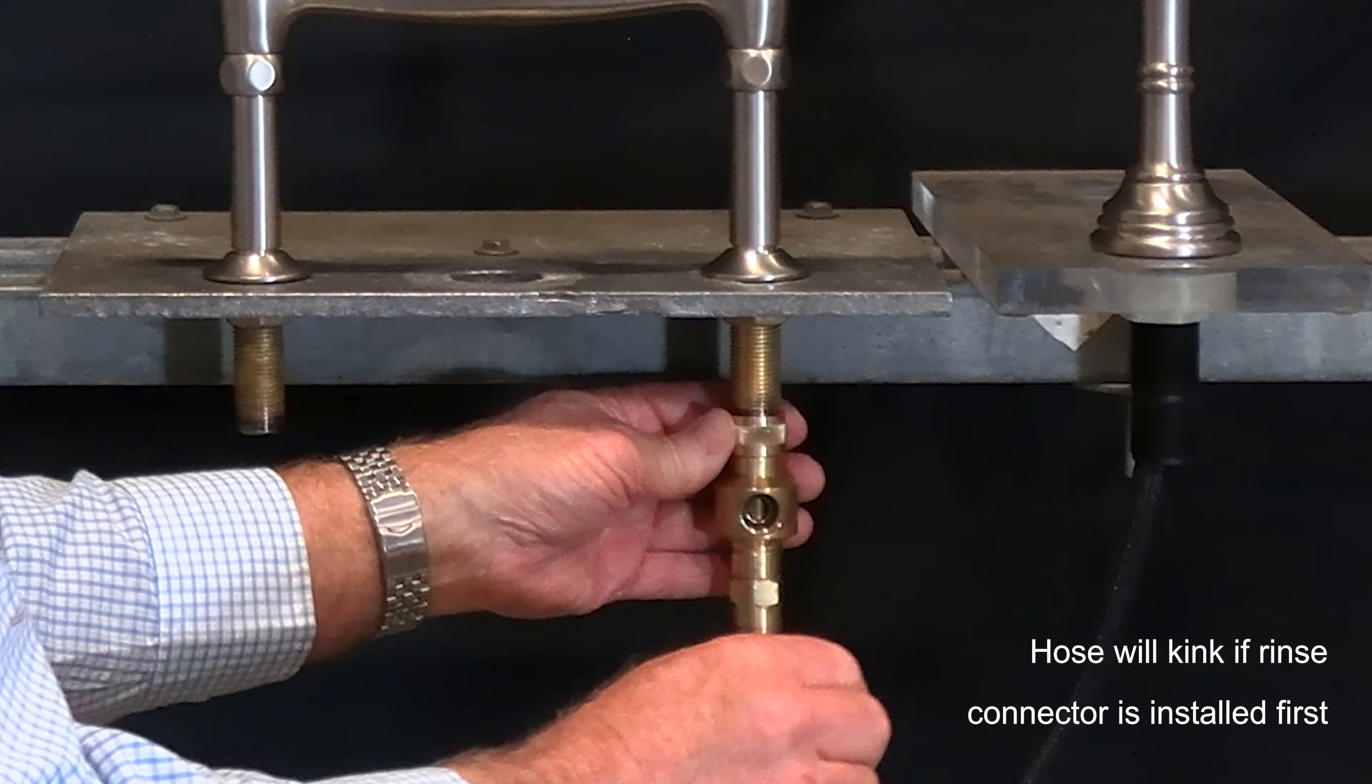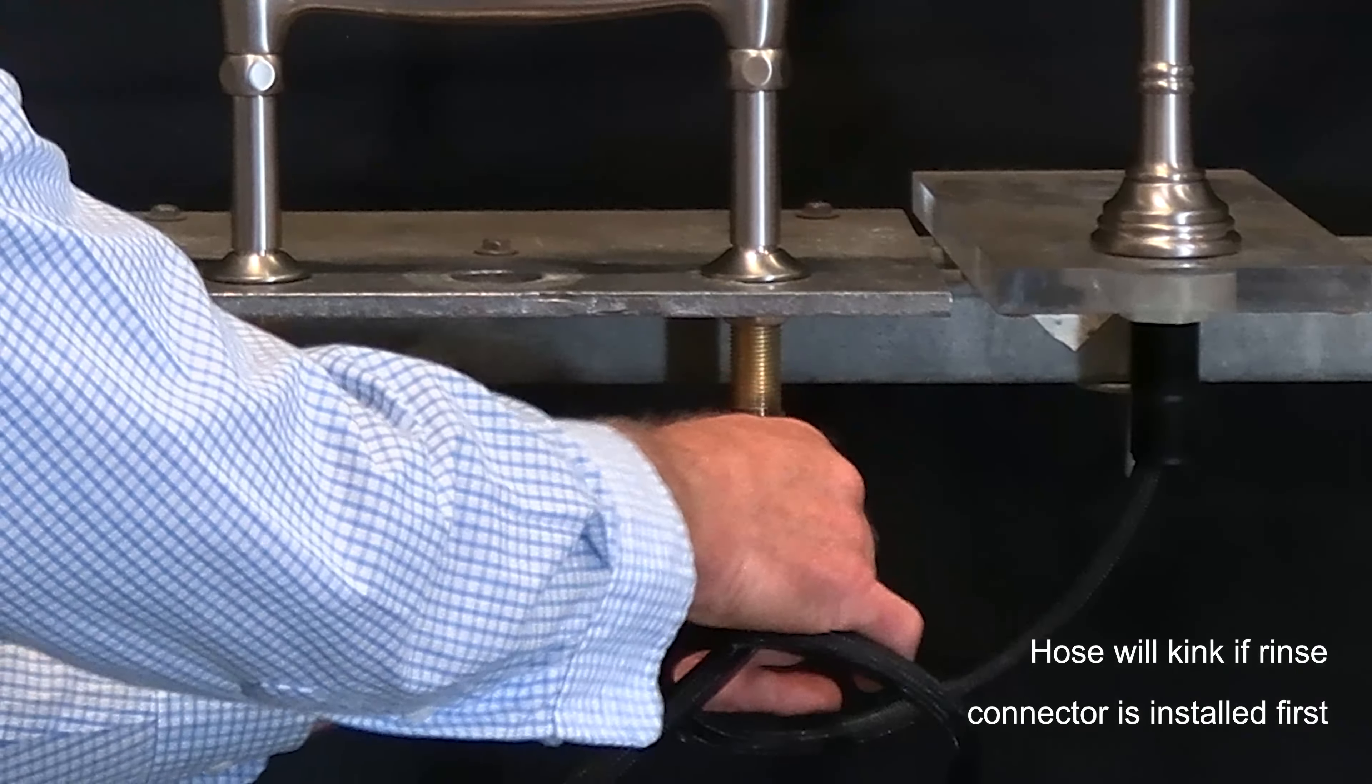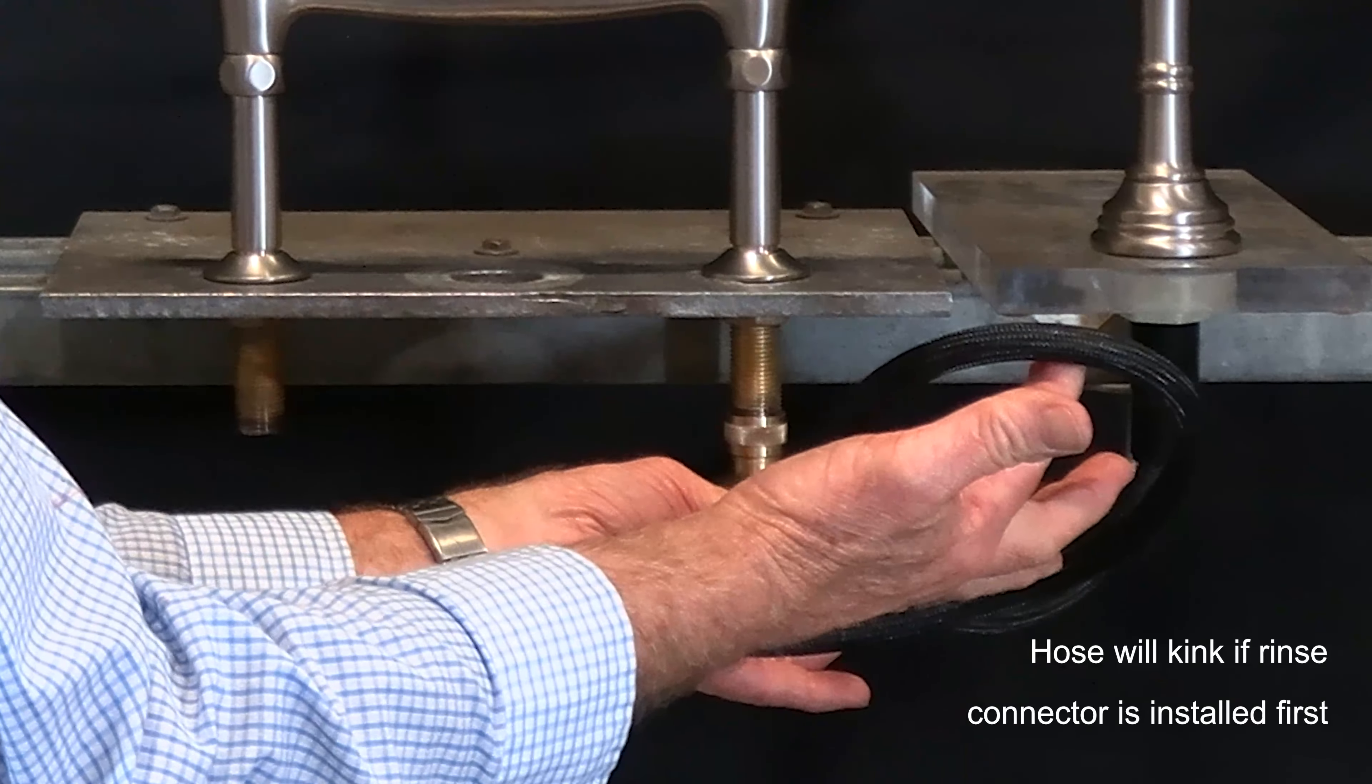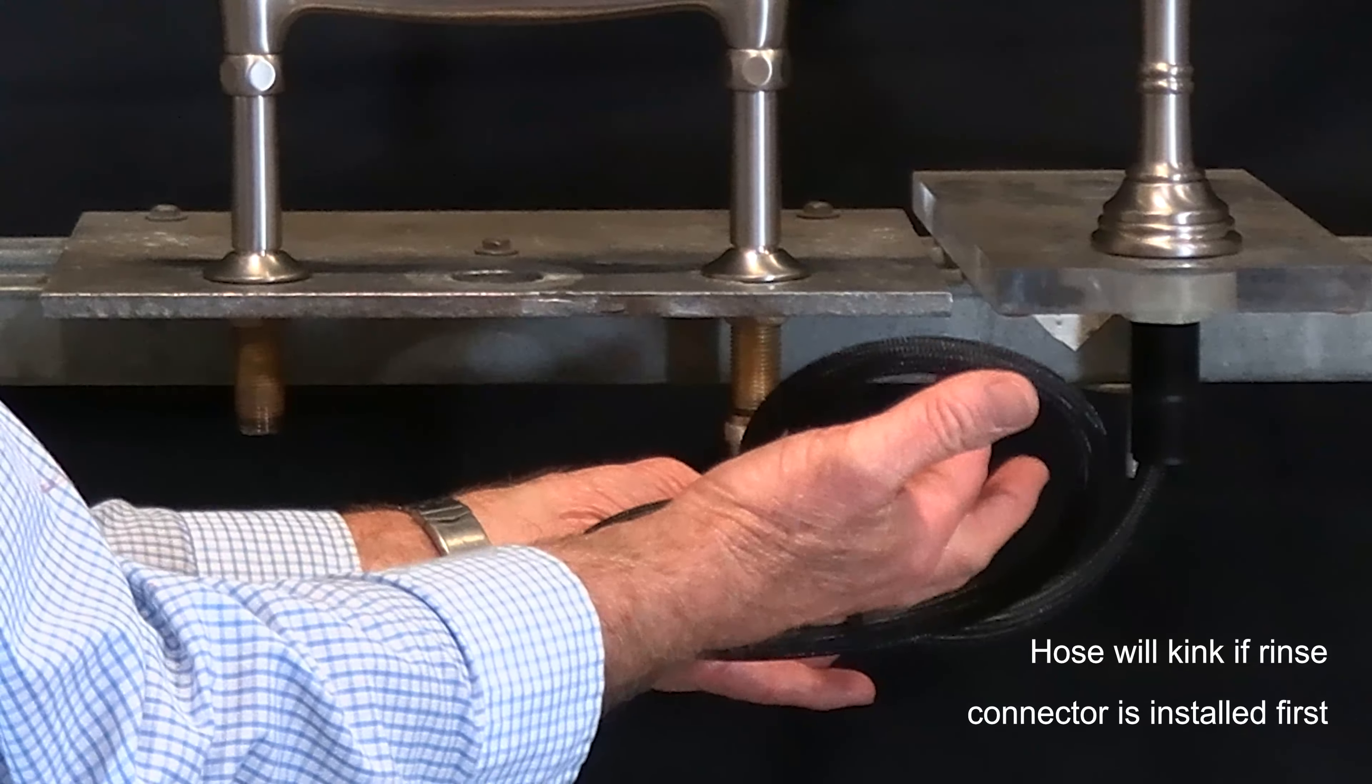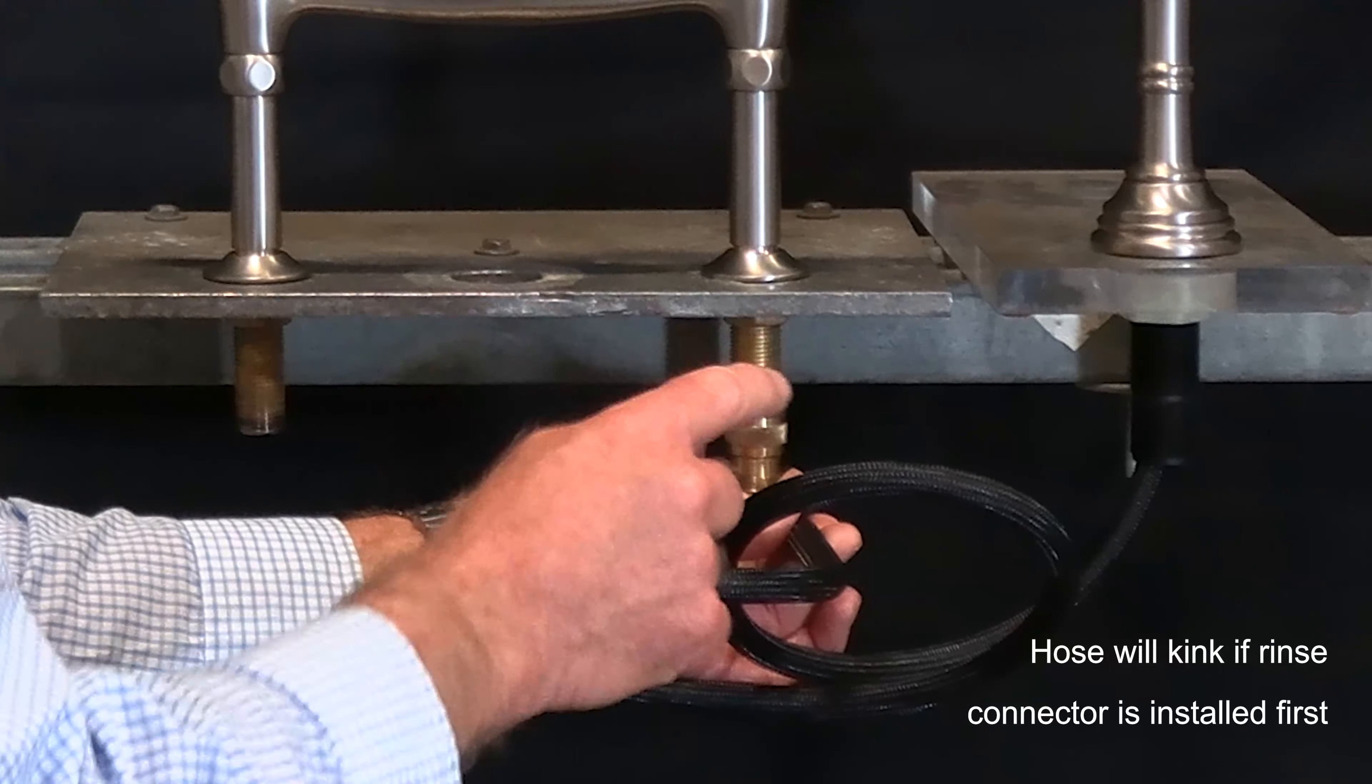So what happens is they install the rinse connector first and then they try to spin the hose onto the rinse connector. Well as you can see this kinks the hose. This will prevent any water from getting to the side spray and this is our most common call.